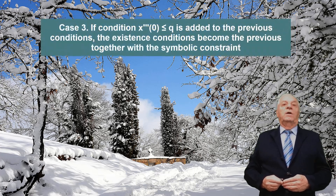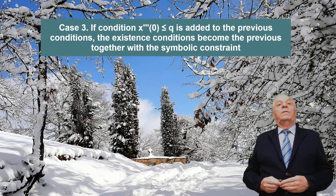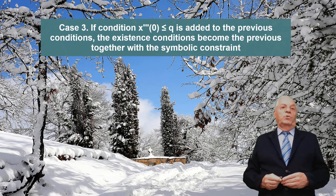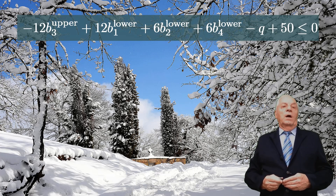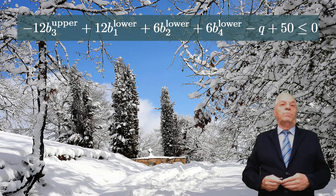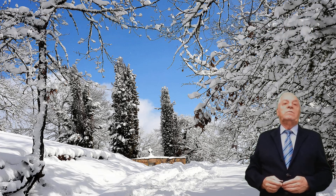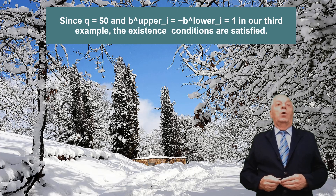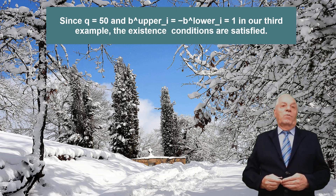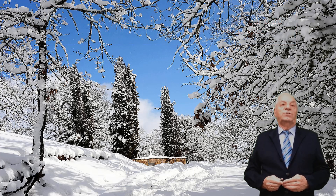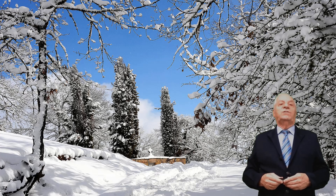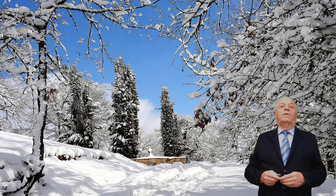Case 3: if the condition x'''(0) ≤ q is added to the previous conditions, the existence conditions become as indicated together with a symbolic constraint. Since q = 50 and b-upper_i = −b-lower_i = 1 in our third example, the existence conditions are satisfied. Note that for large enough q, these conditions become equivalent to simpler conditions.